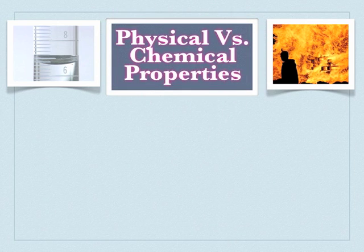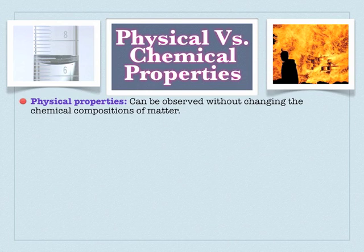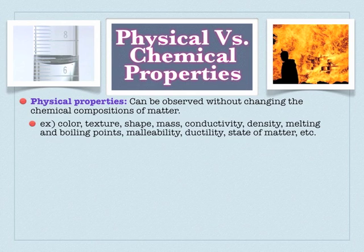To end the day, we'll quickly go over the difference between chemical and physical properties, and chemical and physical changes. Physical properties are those properties that can be observed without changing the chemical composition of matter. If you're measuring something against a scale, it's probably a physical property. Interestingly, melting and boiling points and states of matter are physical properties because, as those things change, you're not changing the chemistry of anything.